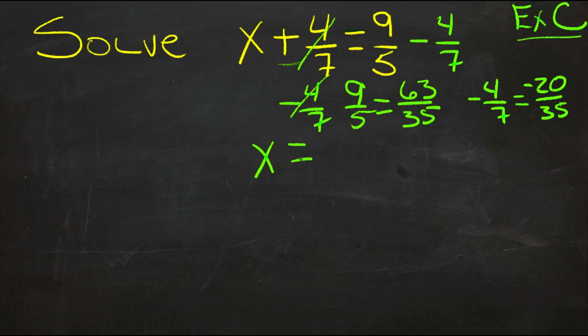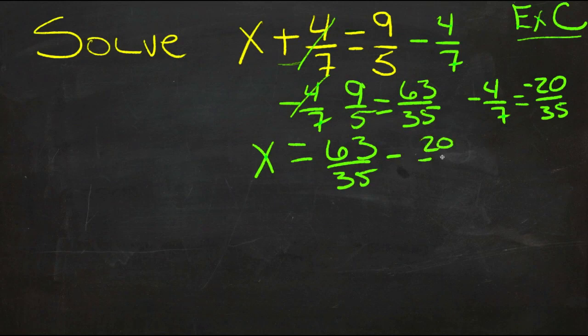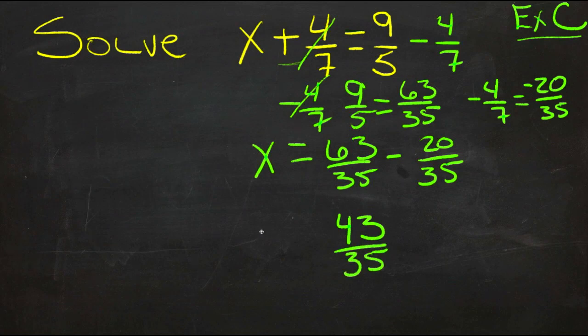That means that our x variable is the same thing as 63/35 minus 20/35. If we have 63 of something, and we take away 20 of the same thing, that's going to leave us with 43 of that thing. In this case, 35ths. So our variable x equals 43/35. And that's our answer.